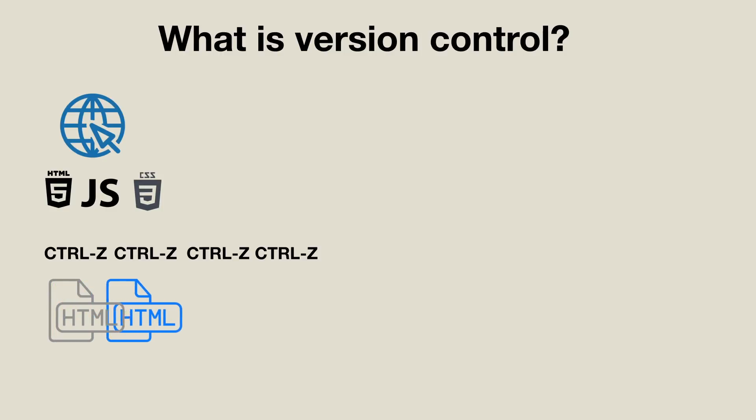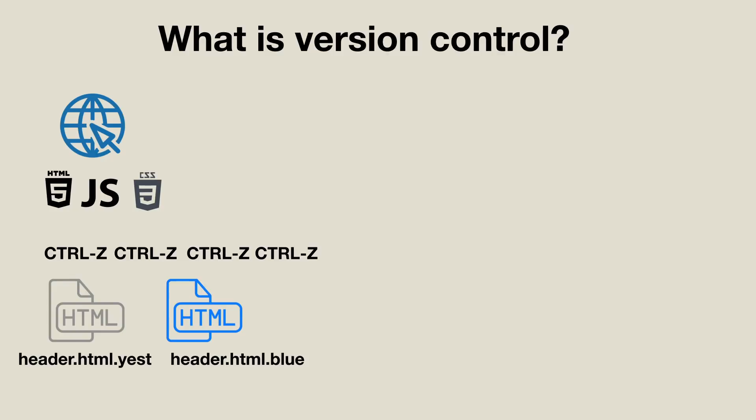Problem two: what if you want to compare different versions of the interface? One workaround is to keep several copies of your files with names like header.html.bluebackground, header.html.yesterday, or header.html.whatever. You're creating multiple copies just to differentiate them, but which one is the correct version? That largely depends on the file name you set, and of course this is just asking for trouble — errors and bugs that are hard to find.